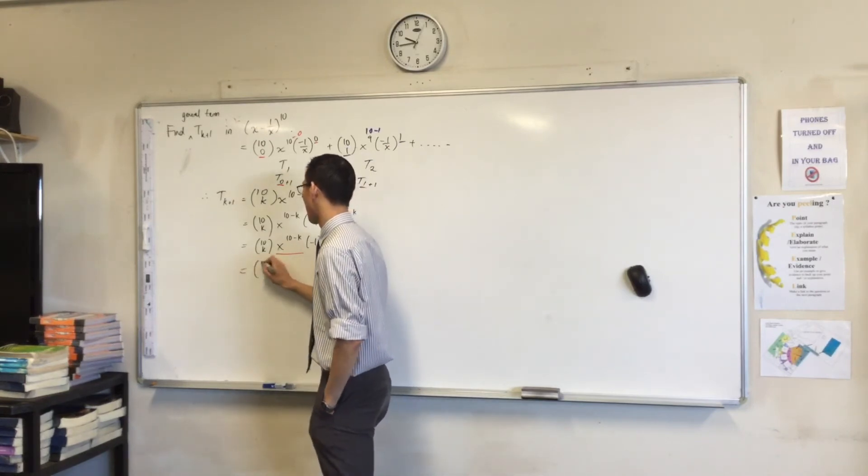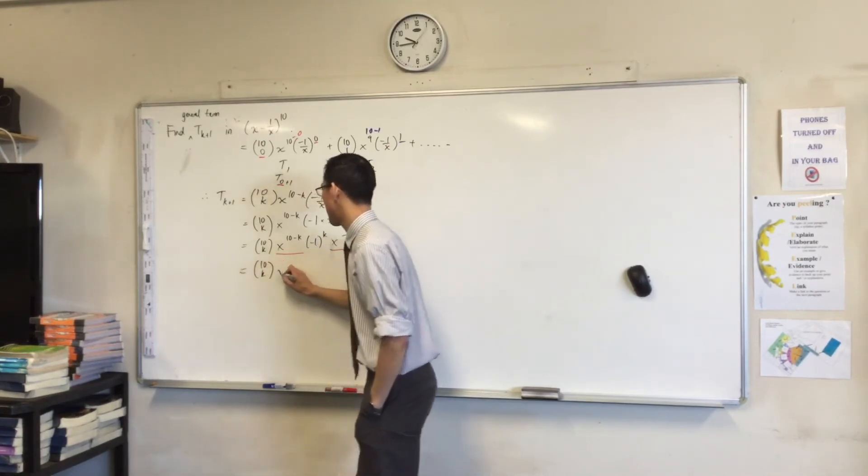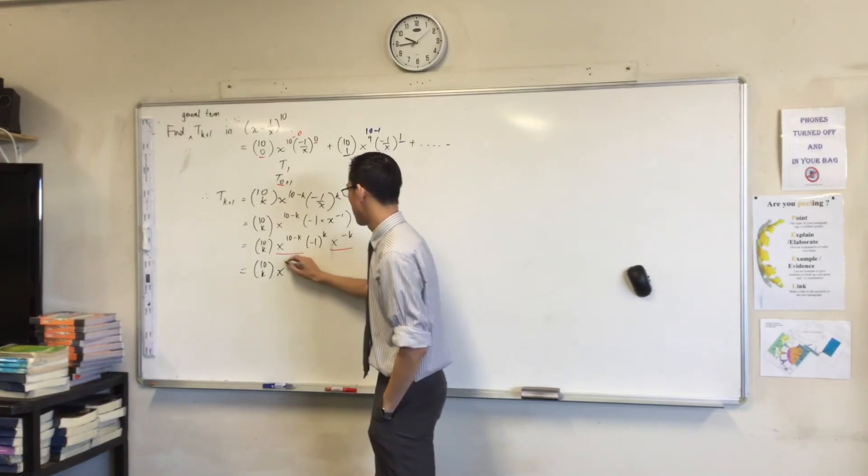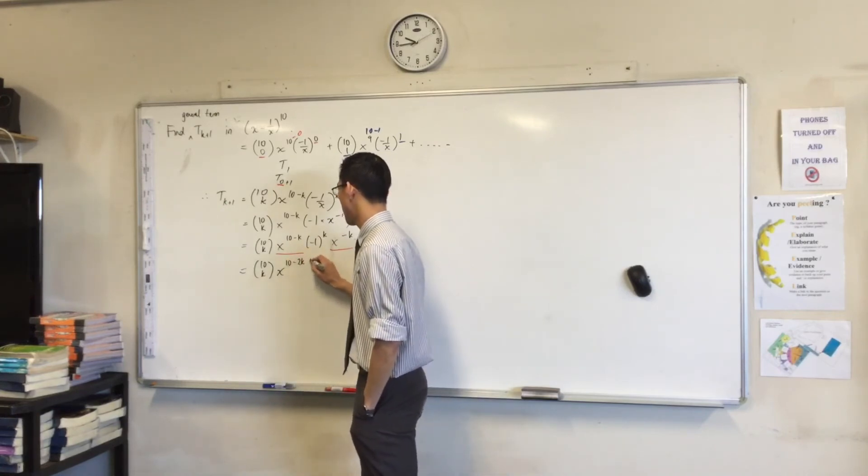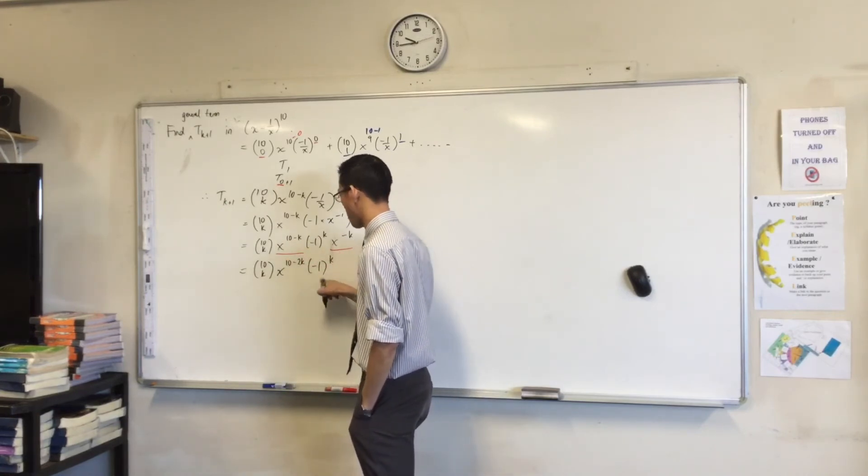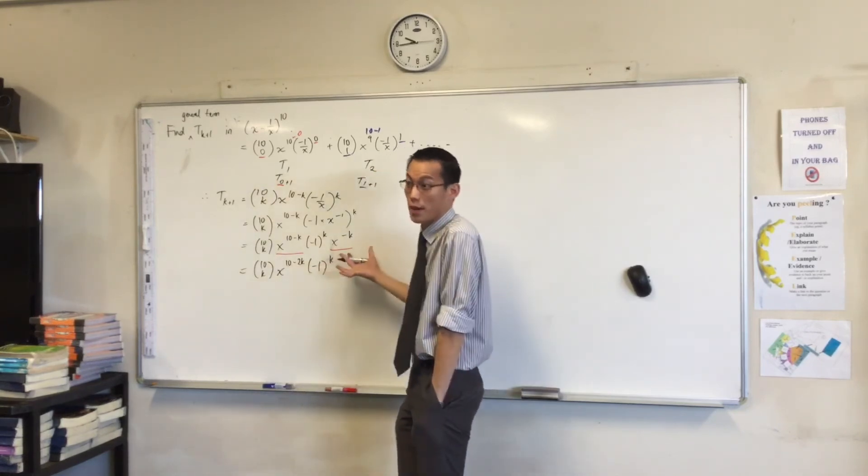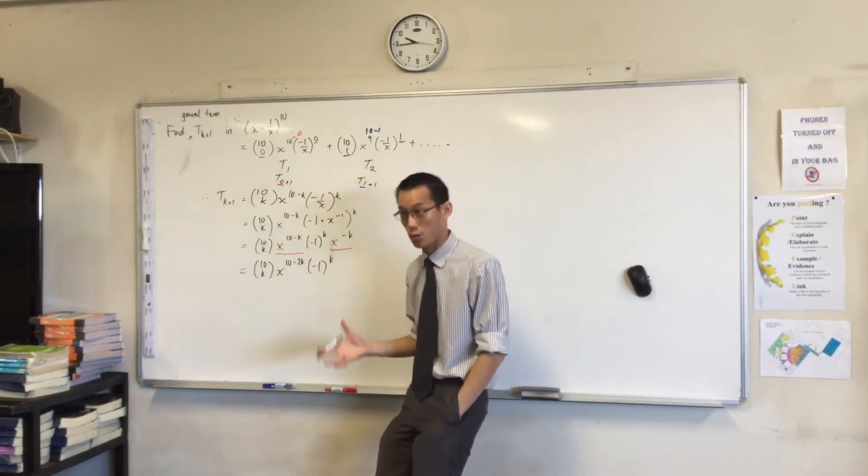So the final line, I'm going to put the powers together, which leaves me with 10Ck x to the 10 minus 2k. I mean, I probably shouldn't put that over there because it's a number, but that's fine. You're done.